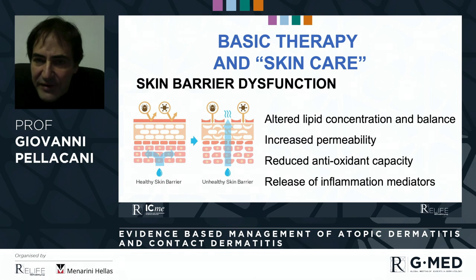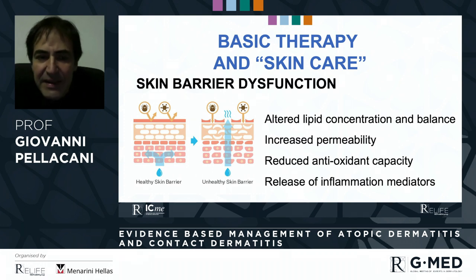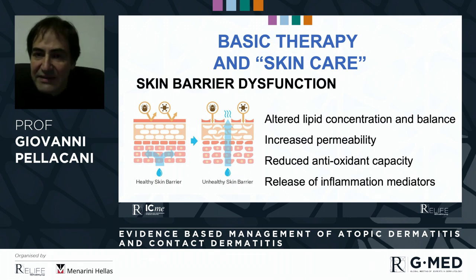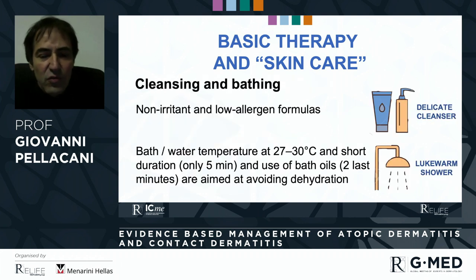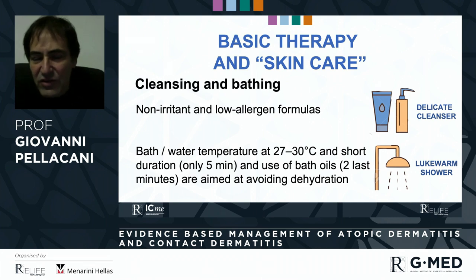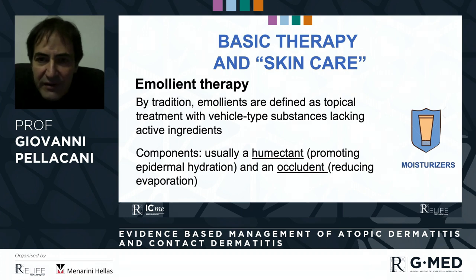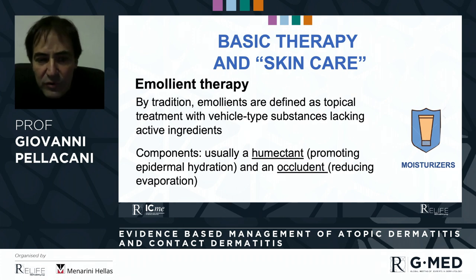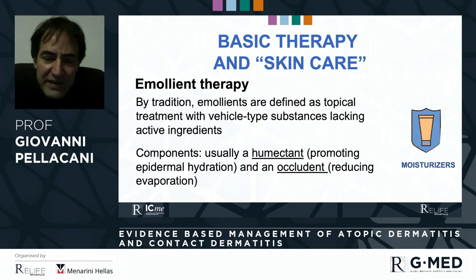As a second step addressing skin barrier dysfunction, we must keep in mind that in all these diseases we have altered lipid concentration and balance, generating increased permeability, reduced antioxidant capacity, and release of inflammatory mediators. We therefore need to care for the skin with delicate cleansers and lukewarm showers, and to restore the barrier function through emollients. An emollient is typically made of a humectant portion for hydration, and an occludent portion to reduce evaporation and improve skin barrier function.